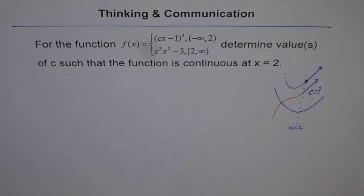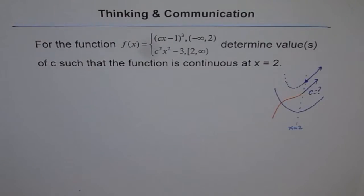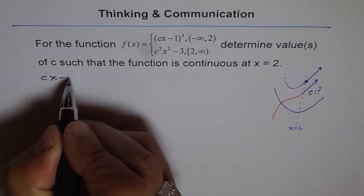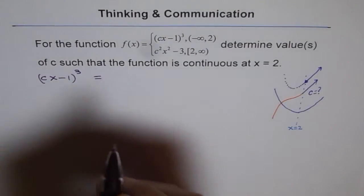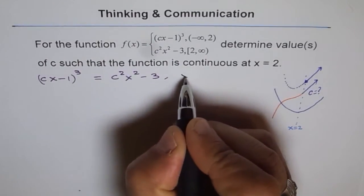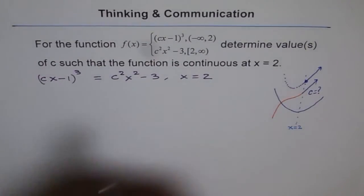I hope you understand and appreciate the problem. Basically, what we will do is equate the cubic equation and the quadratic equation at x equals 2 and then figure out what value of c makes it true. So, cx minus 1 whole cube should equal c squared x squared minus 3 at x equals 2. That will give us the value of c which makes this piecewise function continuous.